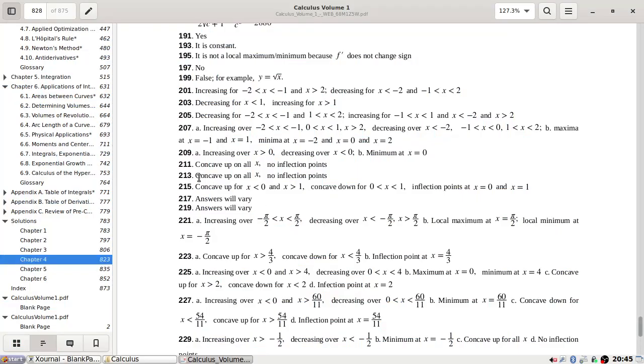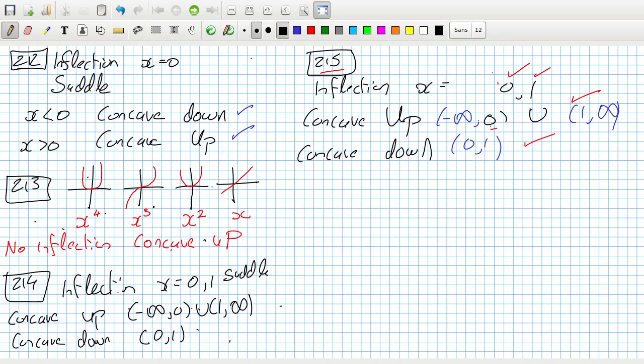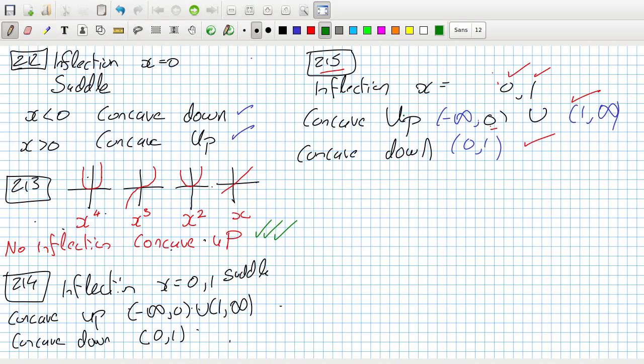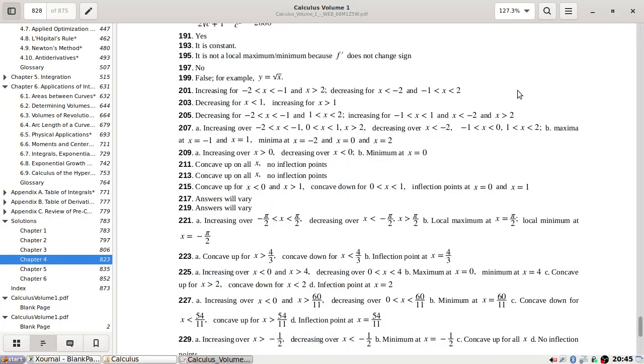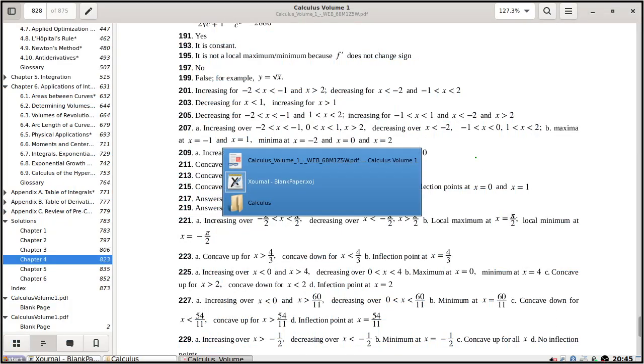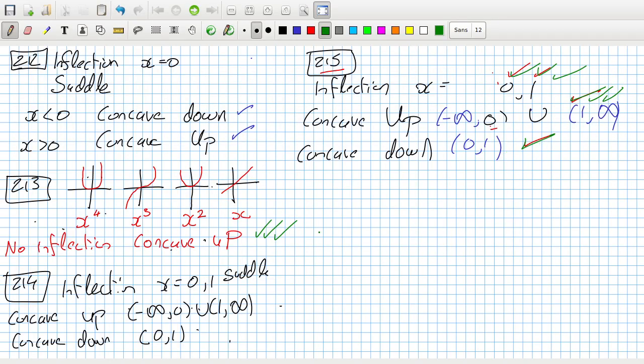215, 236. For now, no inflection points. Yep. Okay 215, concave up for less than 0 and more than 1. Okay. Inflection points at 0 and 1 and concave down between 0 and 1, so I think we're okay now.